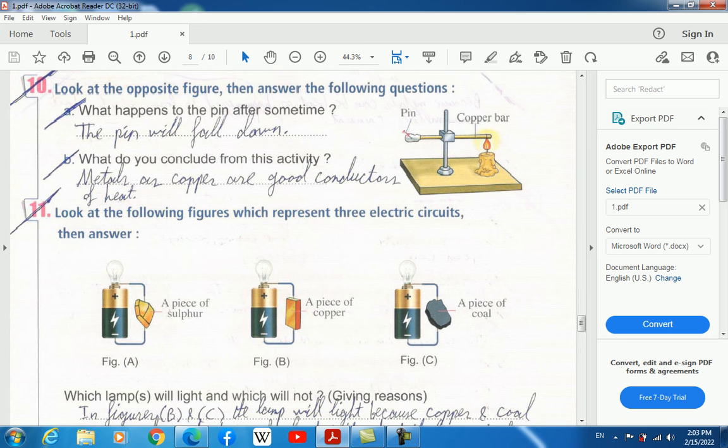Look at the opposite figure, then answer the following questions. What does the opposite figure contain? It contains a copper bar and a pin. What happens to the pin after some time? We have a copper bar, and copper bar is a good conductor of heat. The heat will transfer to the wax where the pin is fixed. The wax will start to melt, and consequently, the pin will fall down.